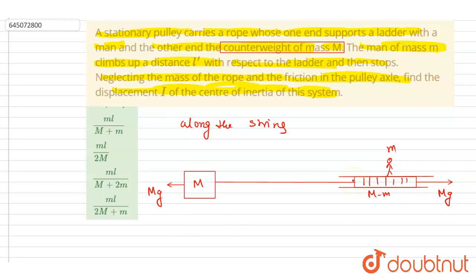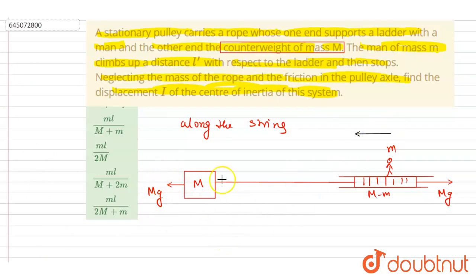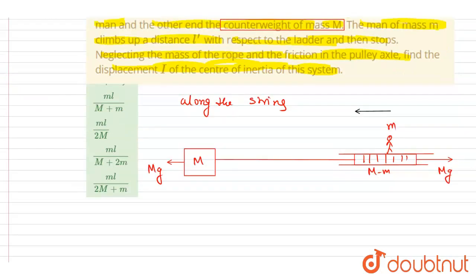Since there is no net force along the string, the net displacement of the center of mass along the string should be zero. The man moved by a distance l in one direction. Let's say the man-plus-ladder system moved in the opposite direction by a displacement x₀.